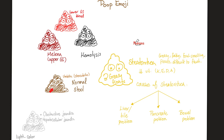This is pale or clay stool. We can see this in obstructive jaundice, post-hepatic jaundice, and in some cases of hepatocellular jaundice as well. This stool is greasy and oily and floats on the water surface in the toilet bowl — this is steatorrhea.